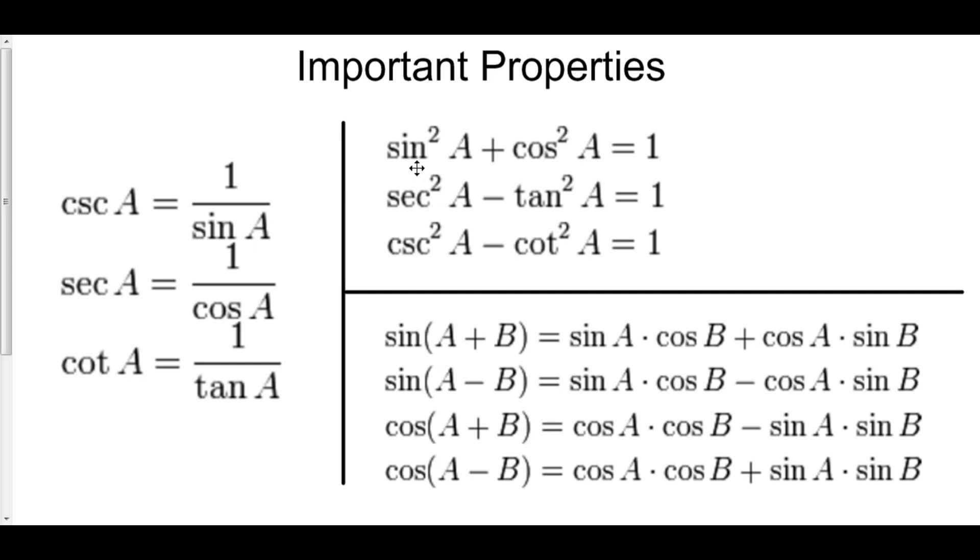You have to memorize that sine squared plus cosine squared is equal to 1. These second two are not as important, mainly because you can get them from the original. If we have that sine squared x plus cosine squared x is equal to 1, by the way this is from the Pythagorean Theorem, if we have this...